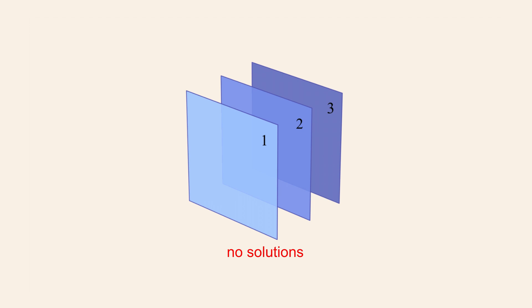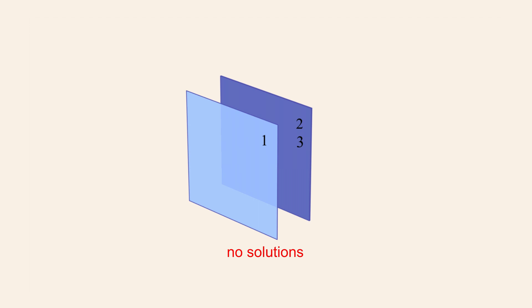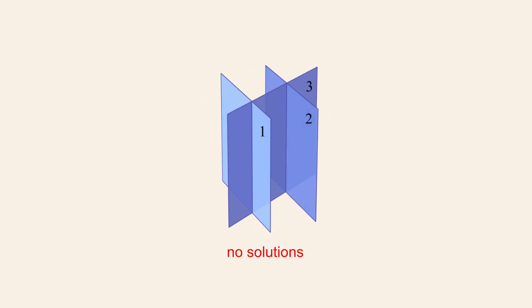In addition, there are several orientations of the planes which will result in a system with no solutions. Anytime a system has two distinct parallel planes, there can be no solution. Since distinct parallel planes have no points in common, regardless of the orientation of the third plane, there can be no points which lie on all three planes. The third plane can be distinct and parallel to the other two, identical to one of the other two, or not parallel to either of the other planes, thus intersecting both planes. Regardless of the orientation of the third plane, since there are no points in common to all three planes, the system has no solutions.